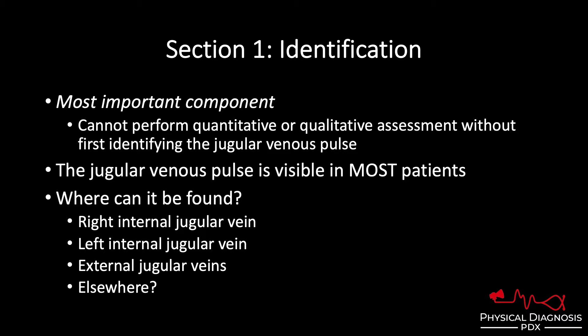If you can't find it on the right IJ, or the left IJ, the third option is an external jugular vein. Unlike the IJ, the EJ is visible in the neck, much like the veins in the back of your hand. If you've exhausted that list and still can't find the pulse, don't stop there — there are other places to look, which we'll get into in a moment.